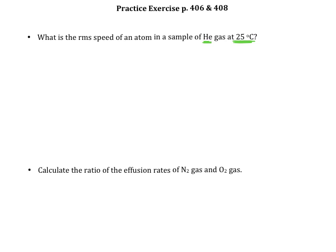The equation that we're going to use is pretty straightforward. Root mean squared speed is equal to the square root of 3 times R times T over M, where M is the molar mass of the substance, so in this case, helium.